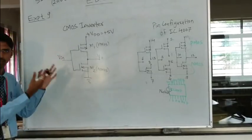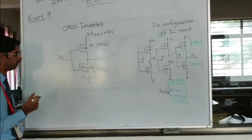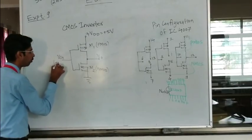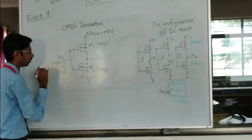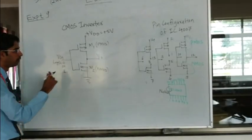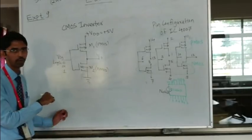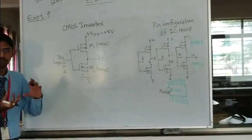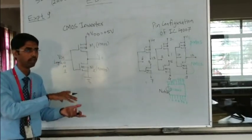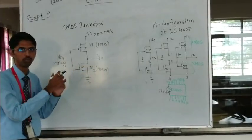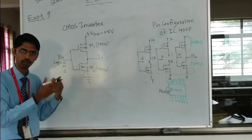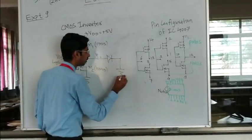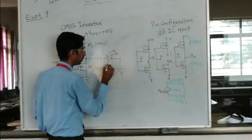We have to verify the truth table for the CMOS inverter — that is our experiment. We are giving input voltage as logic 0 or logic 1, and the output voltage is also logic 0 or logic 1. To know whether the output is logic 0 or 1, we will use an LED connected in forward bias condition. If the LED glows, the output is logic 1; if the LED does not glow, the output is logic 0.